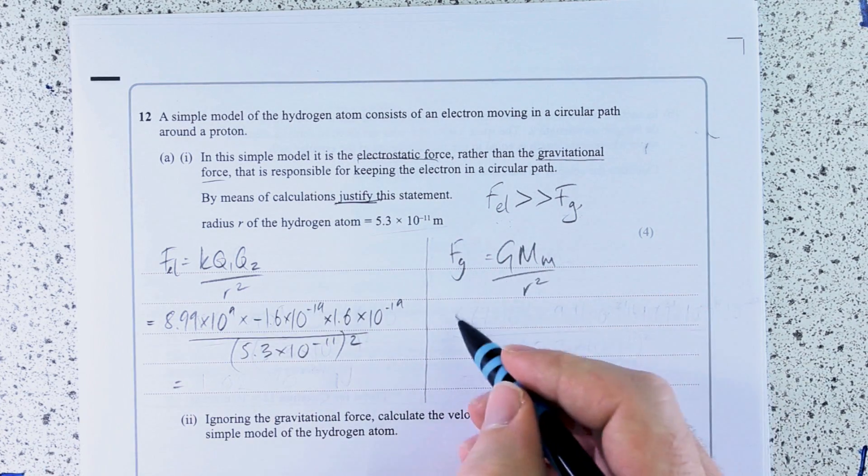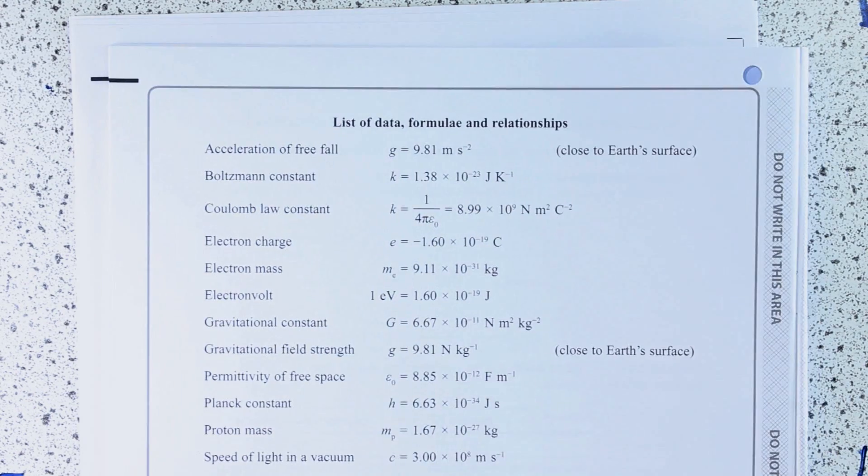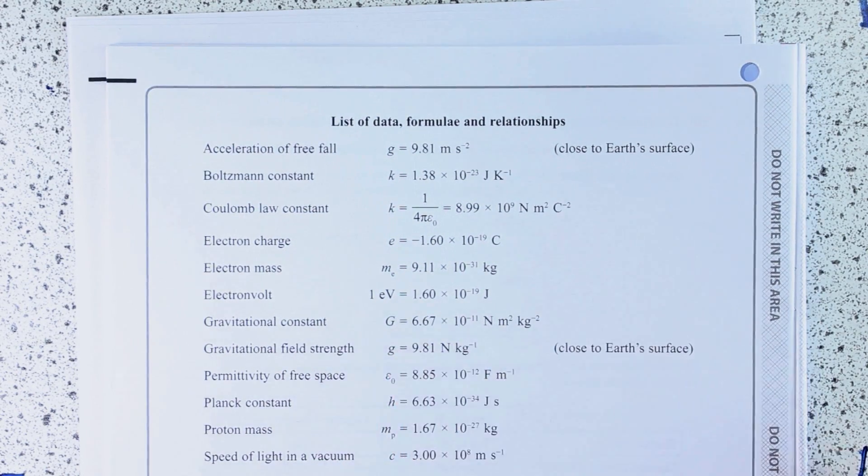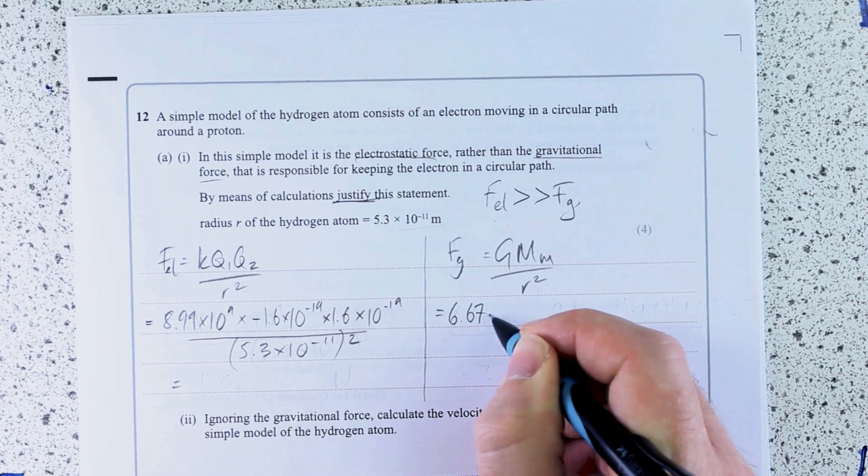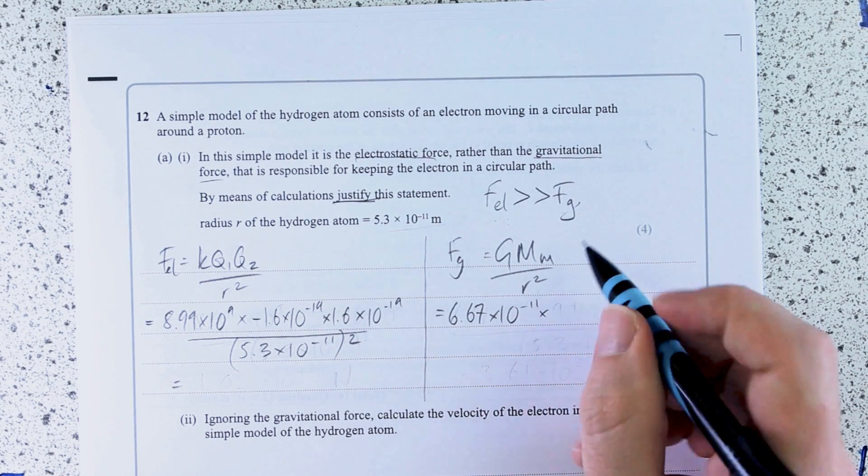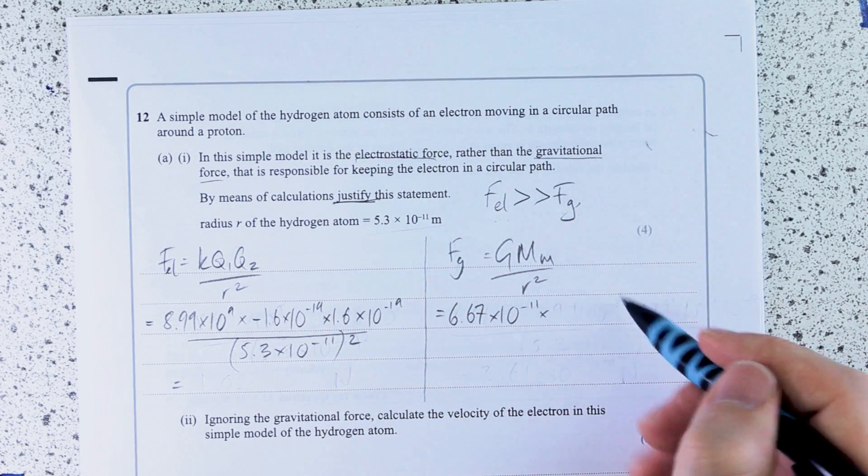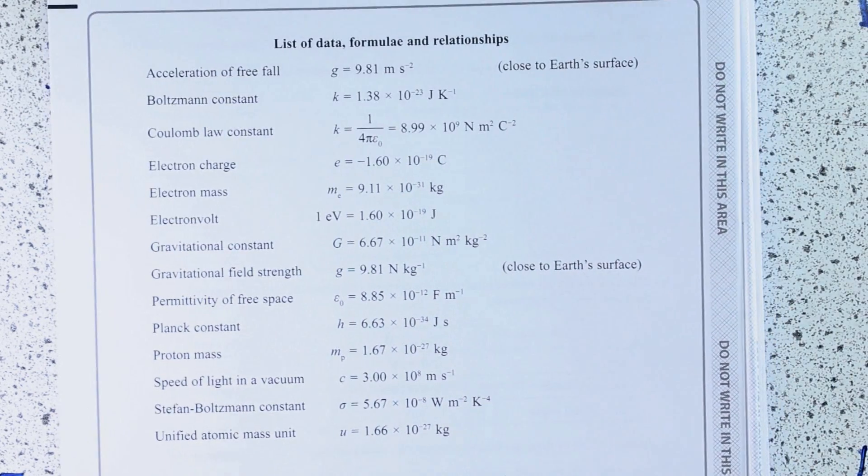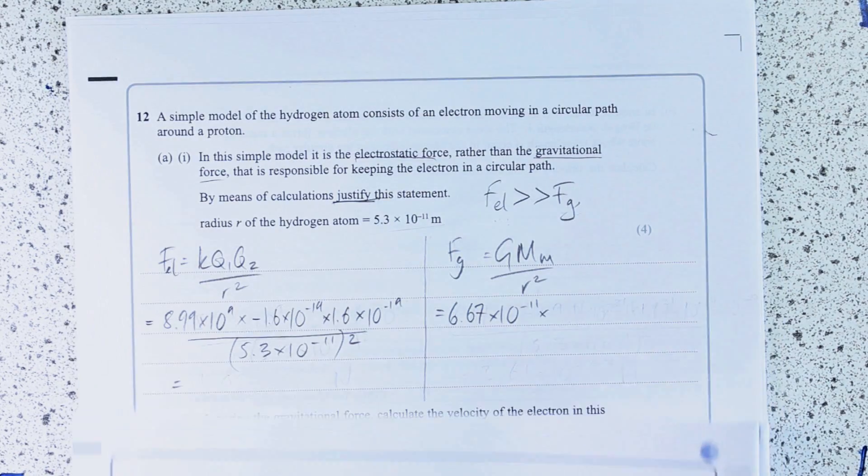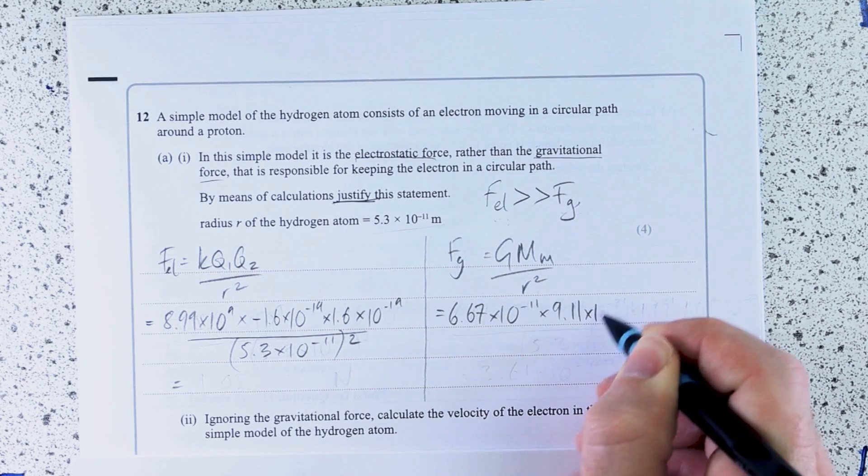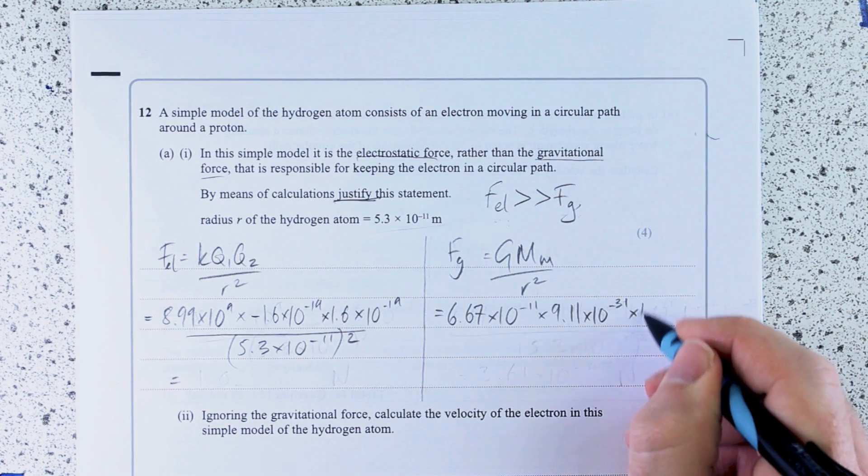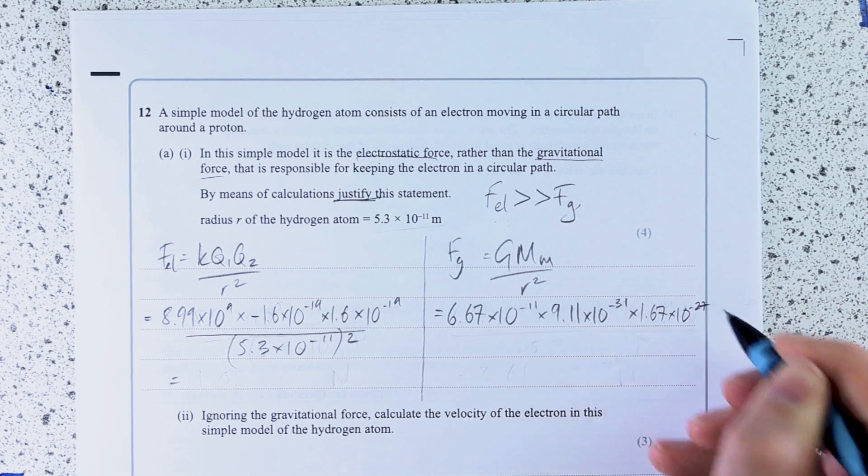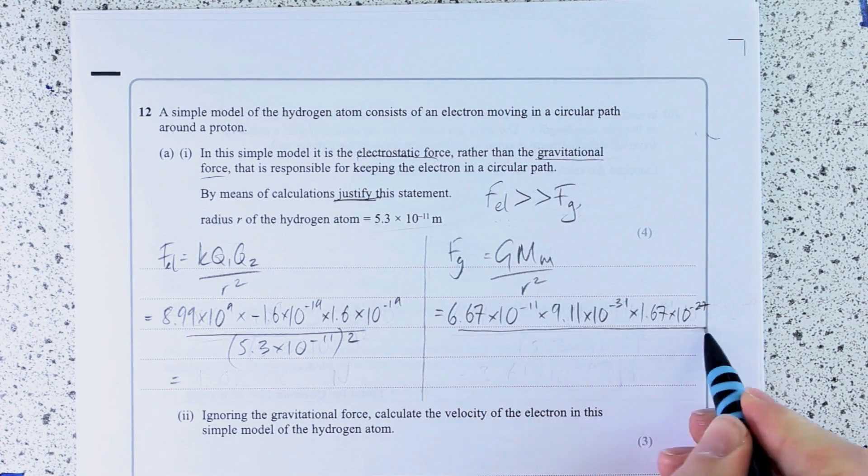And then the gravitational force, we use the universal constant of gravitation G, big G, 6.67 times 10 to the minus 11. And we're going to multiply it by the mass of the proton and the mass of the electron. So they're both in my datasheet as well: 9.11 times 10 to the minus 31 and 1.67 times 10 to the minus 27. And that is all over R squared as well.